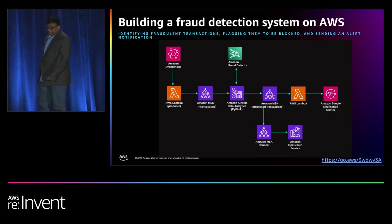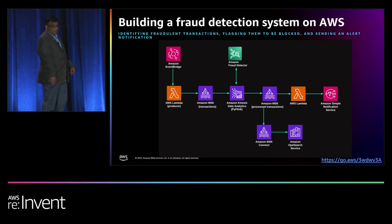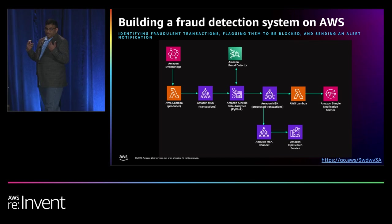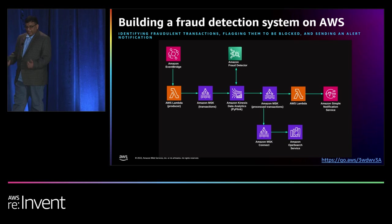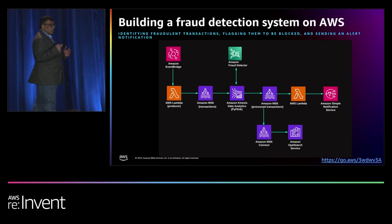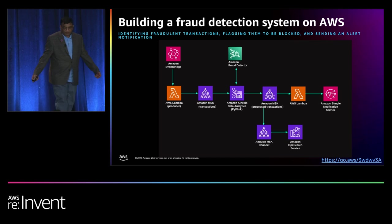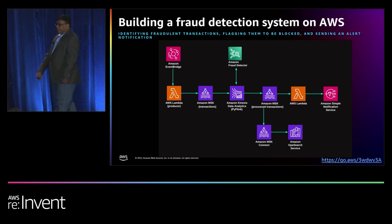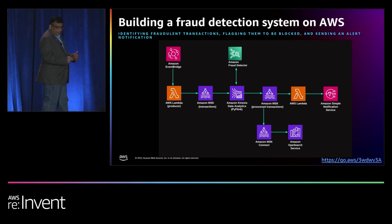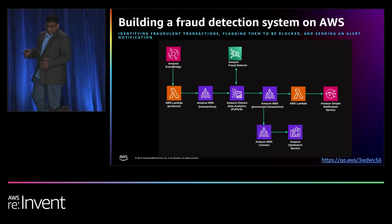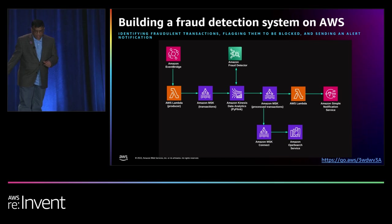Building a fraud detection system on AWS: this reference architecture can be used to build fraud detection by using Amazon MSK and Amazon Fraud Detector. You can get user transactions either from AWS Lambda or use Amazon EventBridge to simulate transactions. Amazon MSK can collect those transactions, and Amazon Kinesis Data Analytics can read those transactions and make a call to Amazon Fraud Detector to get the fraud detection results. It can then write the fraud detection results into another MSK topic, from where AWS Lambda can collect them and send an automated email using Amazon SNS. You can also use Amazon OpenSearch to connect and get these fraud detection results and build a user-friendly dashboard using Amazon OpenSearch Dashboards.